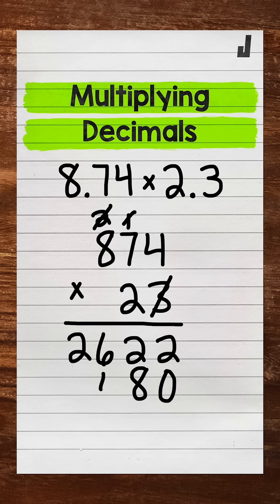2 times 7 is 14. And then 2 times 8 is 16, plus 1 is 17.